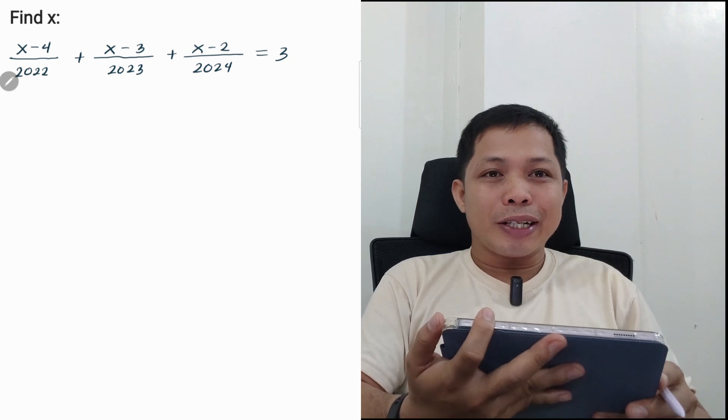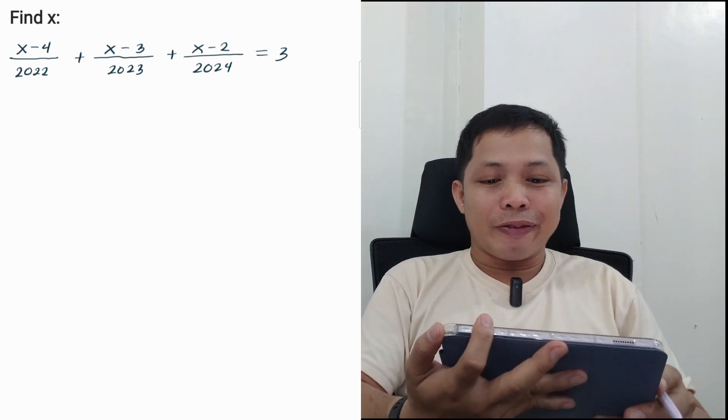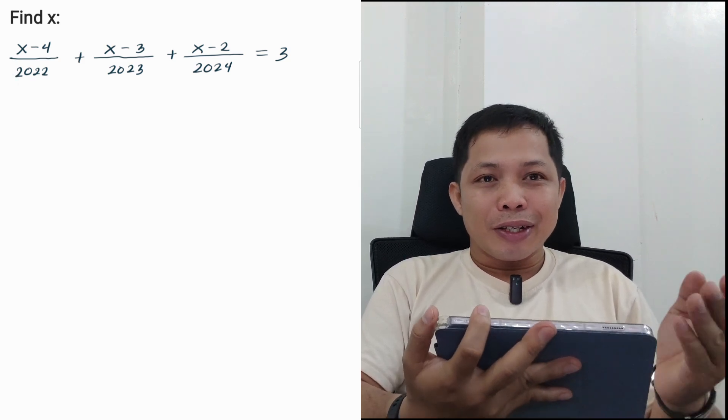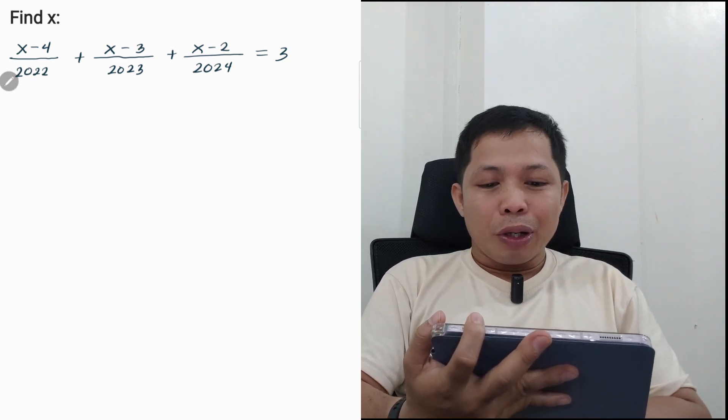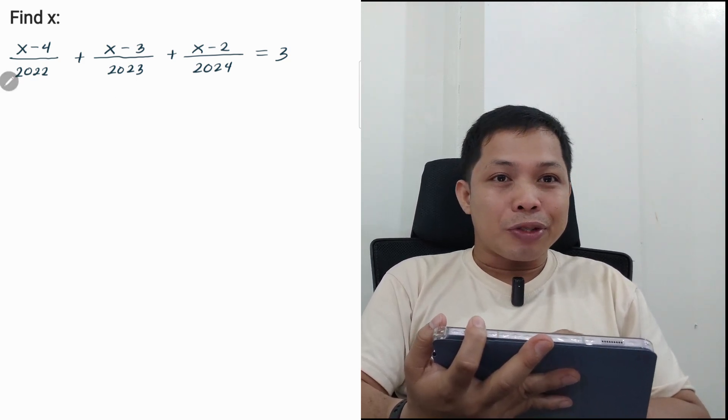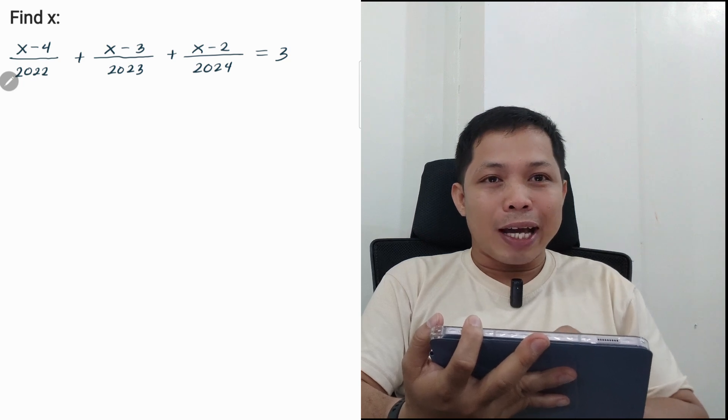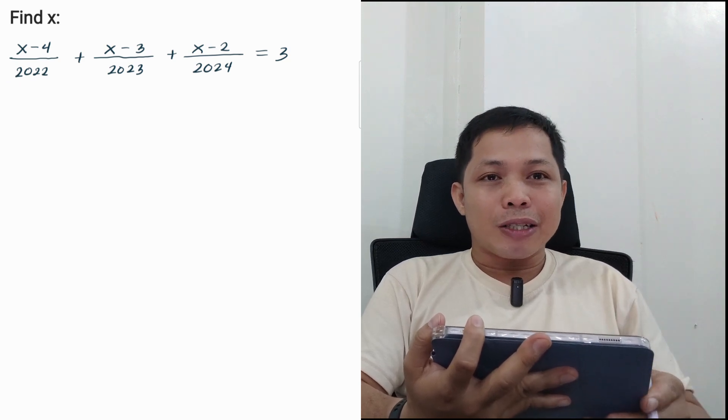So basically, using the concept of LCD will be very difficult. So instead, use this trick. First, to solve this equation, we will equate this equation to 0. We can do that by subtracting both sides by 3.